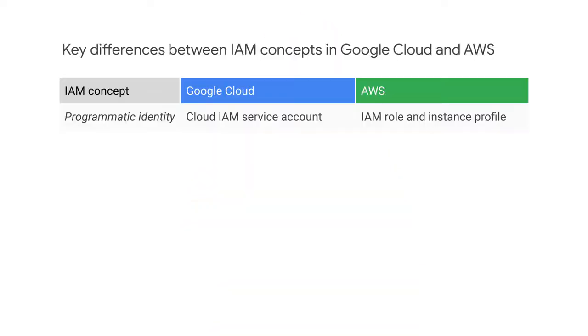Although IAM for Google and AWS perform the same function, they do it in very different ways. Google uses service accounts to control service-to-service authentication, while AWS uses IAM roles and profiles to accomplish this control.